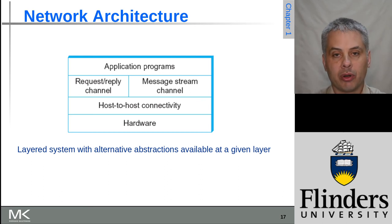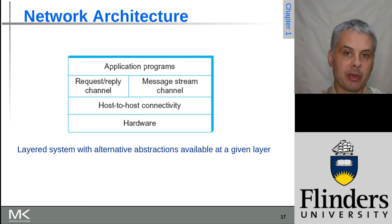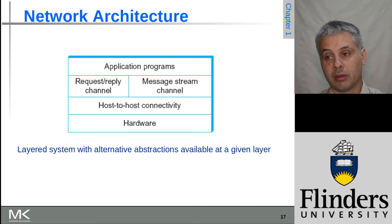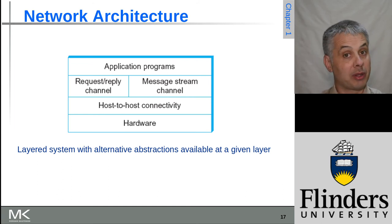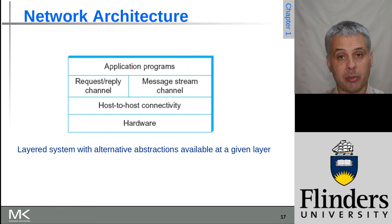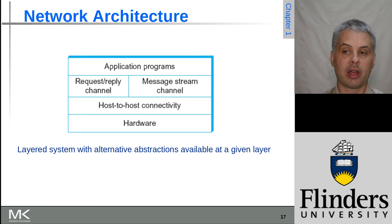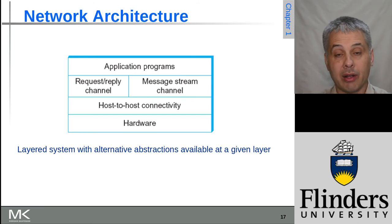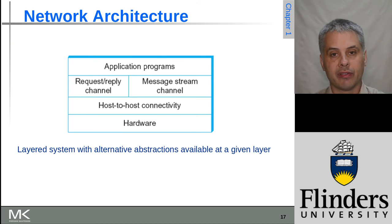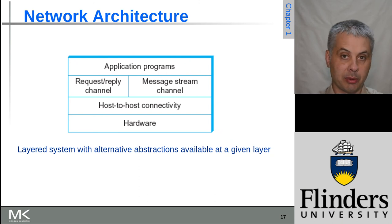Another thing you can find is that some layered models have more than one implementation available at a particular layer. For example, with IPv4 and IPv6 there are two different options at the host-to-host layer. At higher layers too — as discussed with video conferencing — a message stream for video might have multiple options such as reliable versus unreliable delivery, or a request-reply channel. These are two different implementations at that layer, and it's actually a strength of the network to have appropriate solutions. Each solution fits into the layers above and below it in a standardized manner, greatly simplifying implementation.